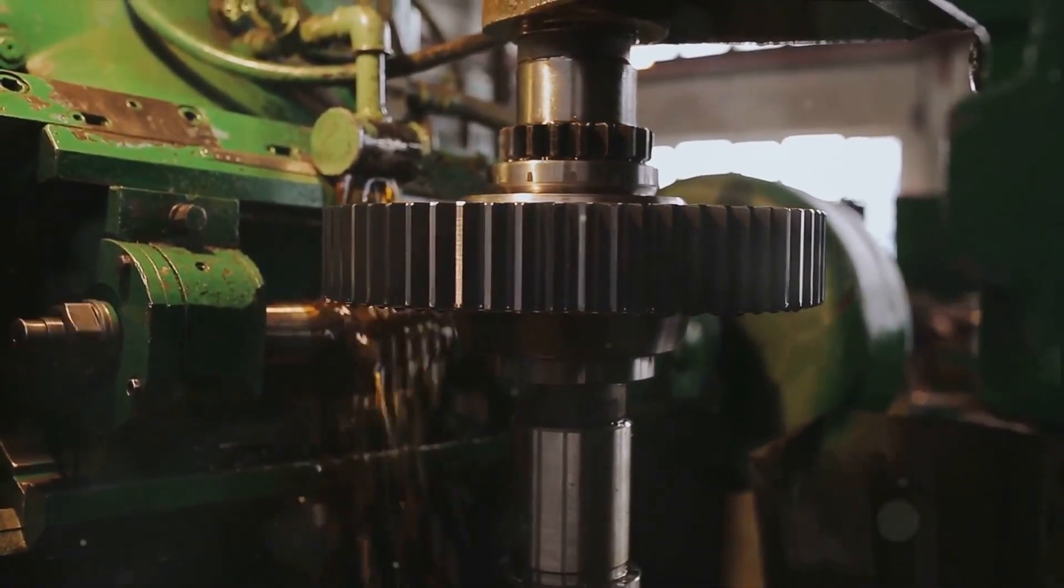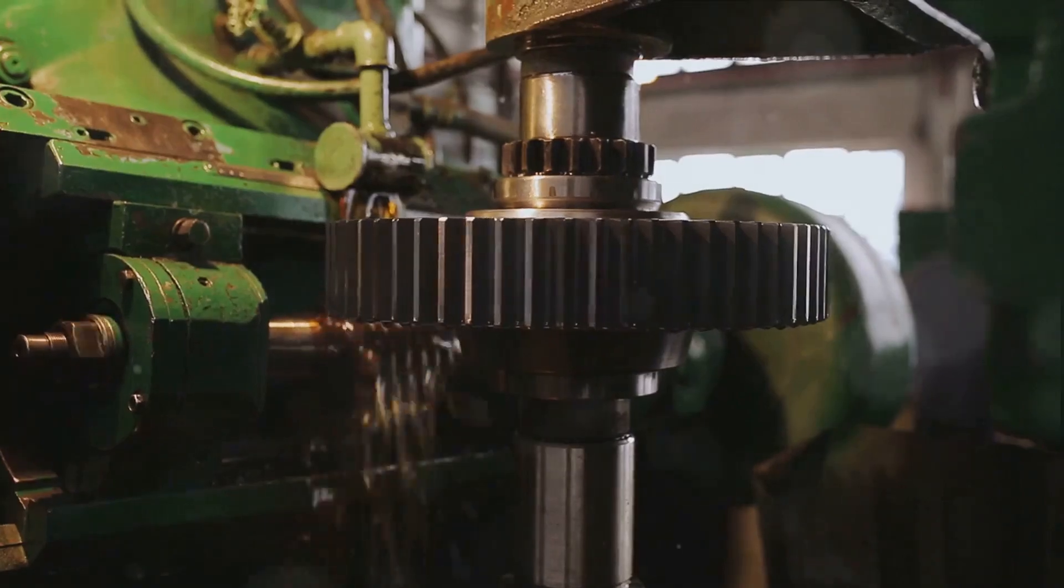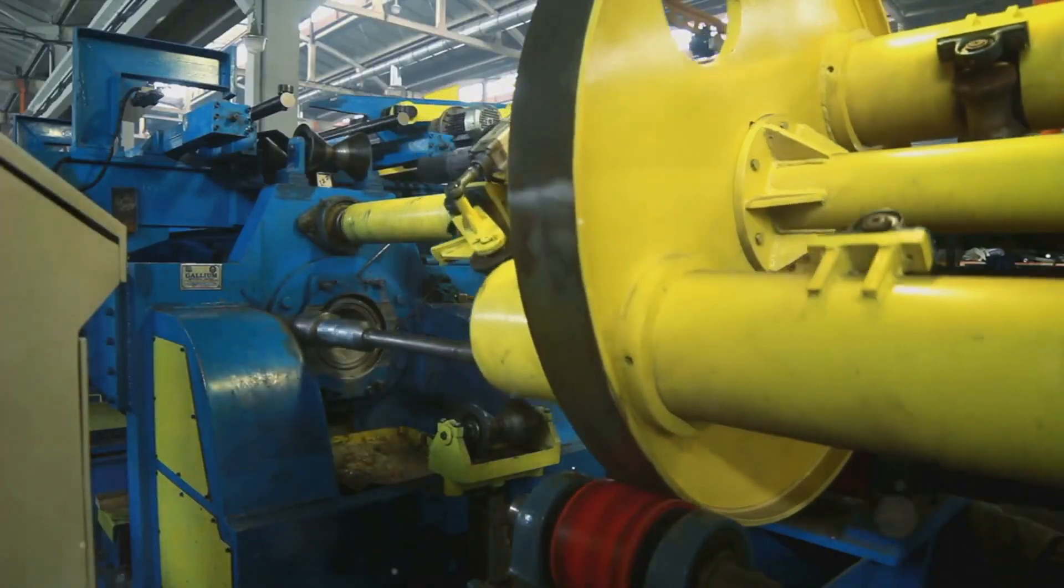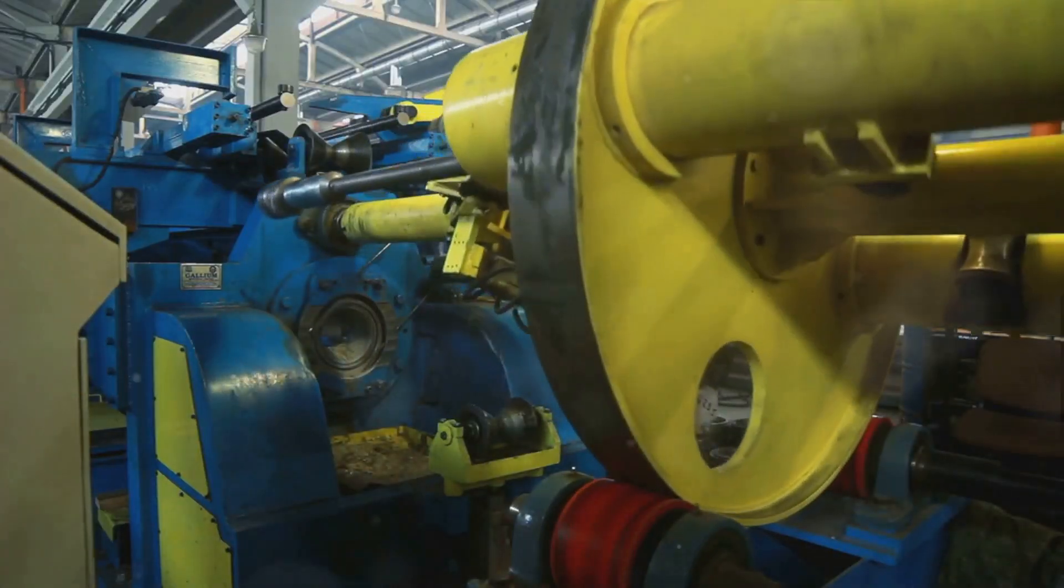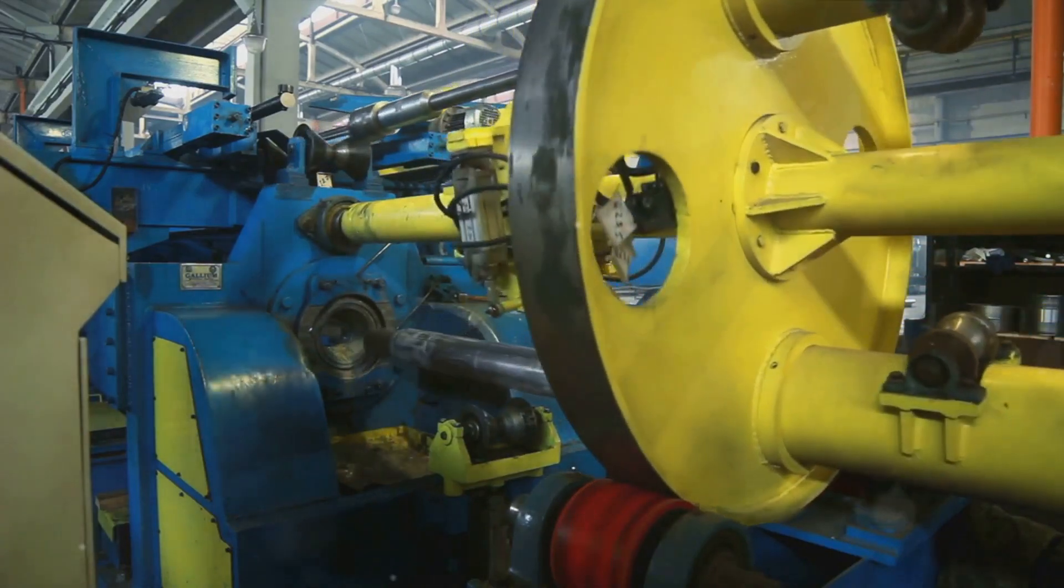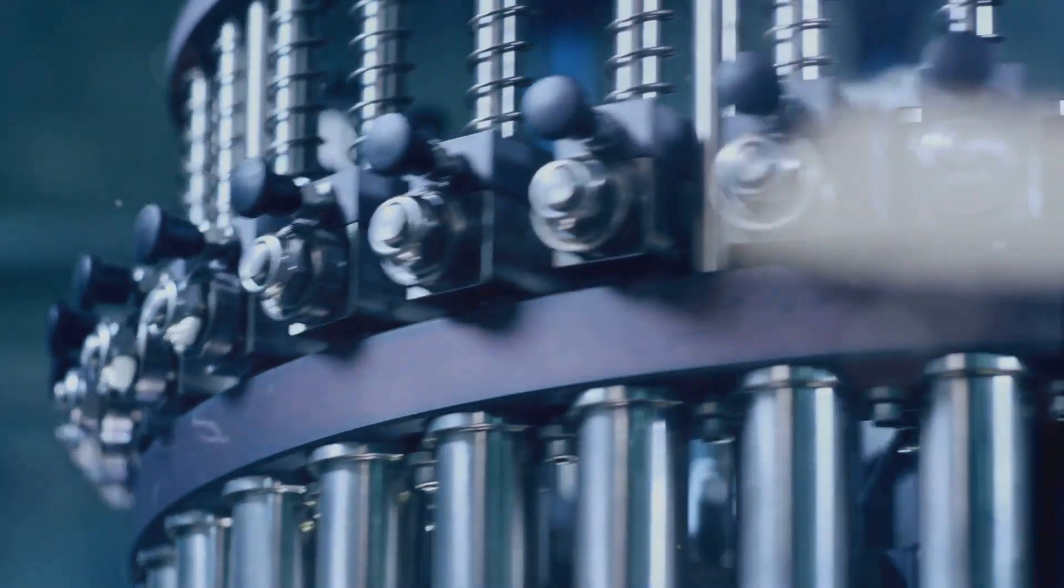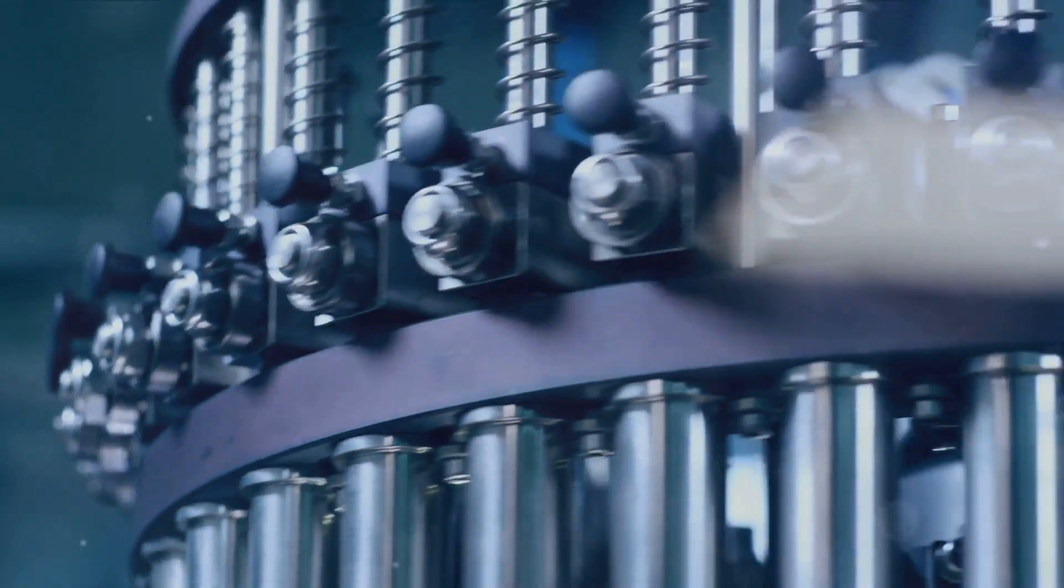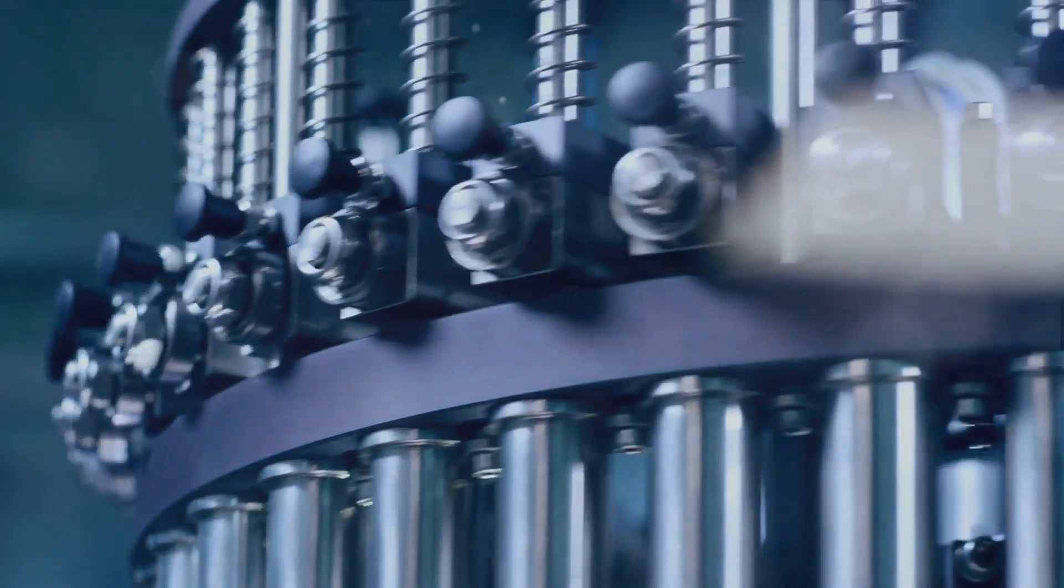Our focus today will be on three machines that play vital roles in these transformation processes: the power press machine, the knurling machine, and the wadding machine. Each of these machines has its own unique role and function, contributing to the overall efficiency and productivity of the plant.